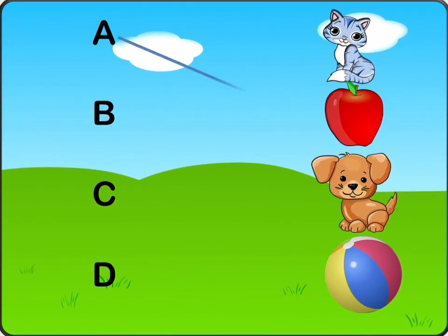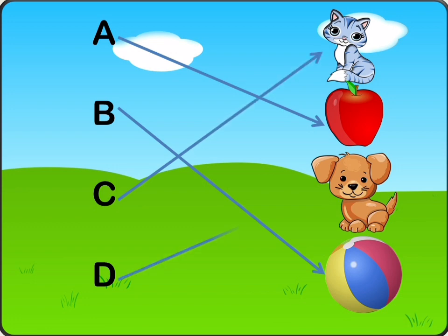A is for Apple. B is for Ball. C is for Cat. D is for Dog.